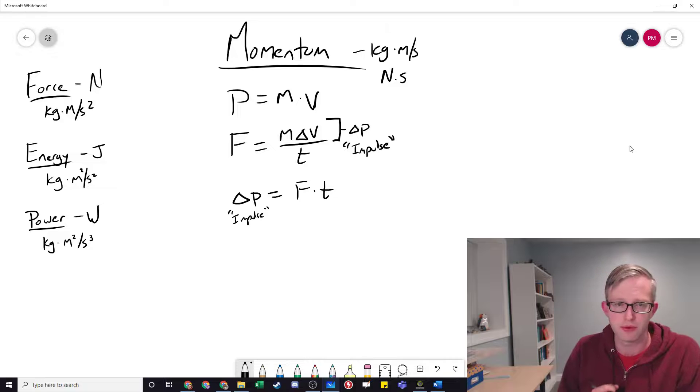One last point before you go off to practice this. Because momentum is the product of the scalar mass, which has no direction, multiplied by the vector velocity, which does have a direction, momentum is a vector. That means momentum has a direction. It's straightforward how to find that direction. The direction is whatever the direction of the velocity is. If an object has a positive velocity, it would have a positive momentum.